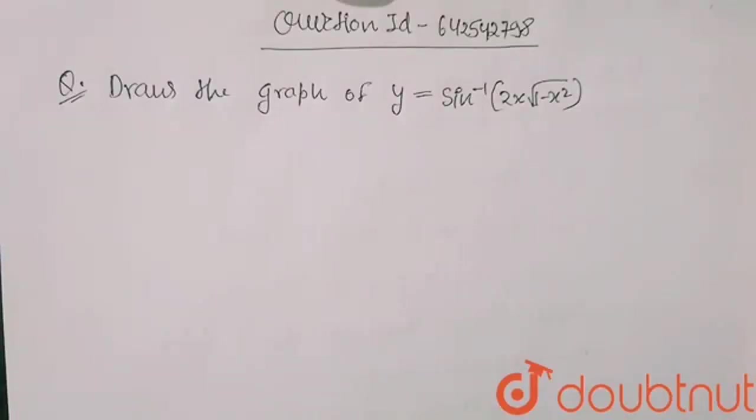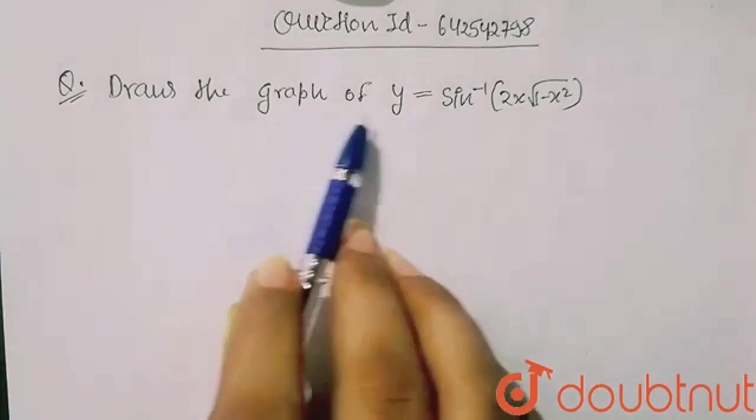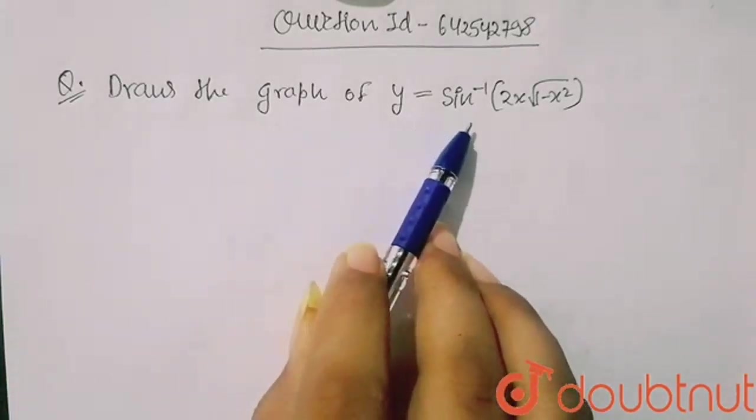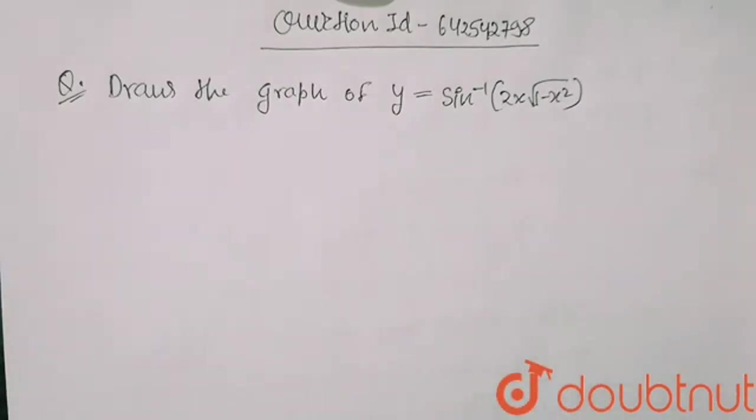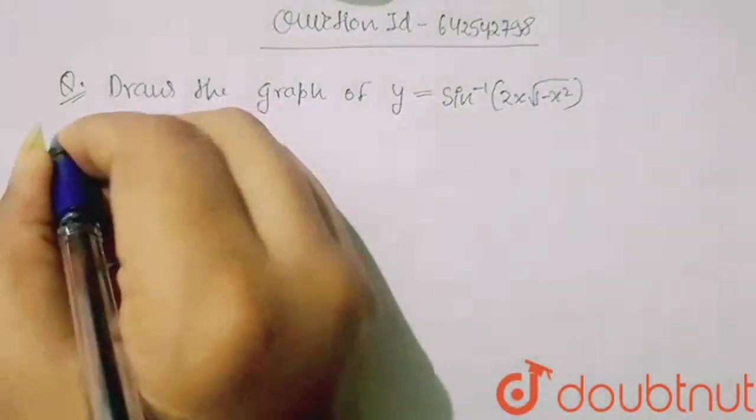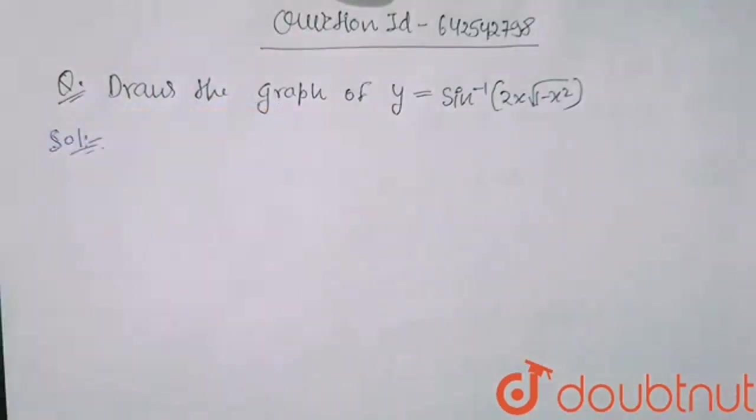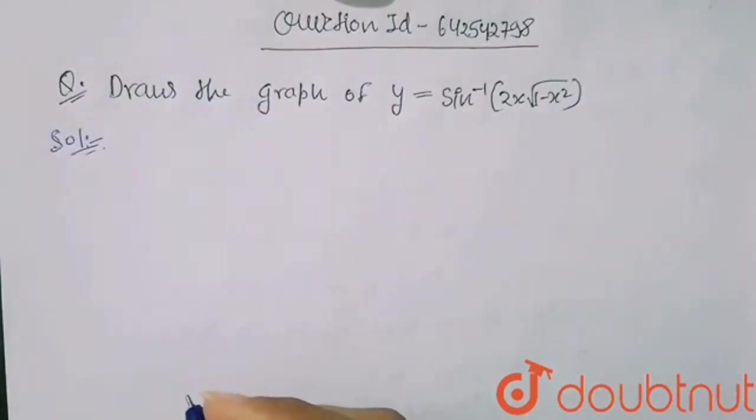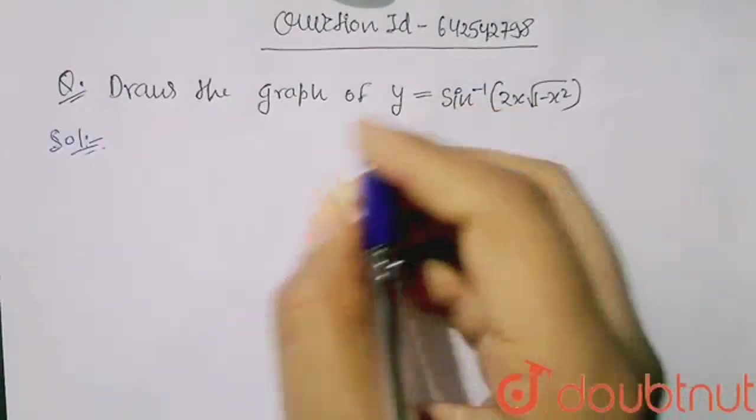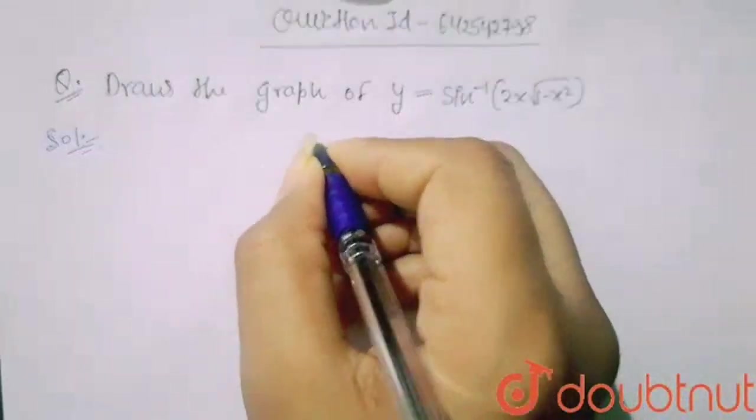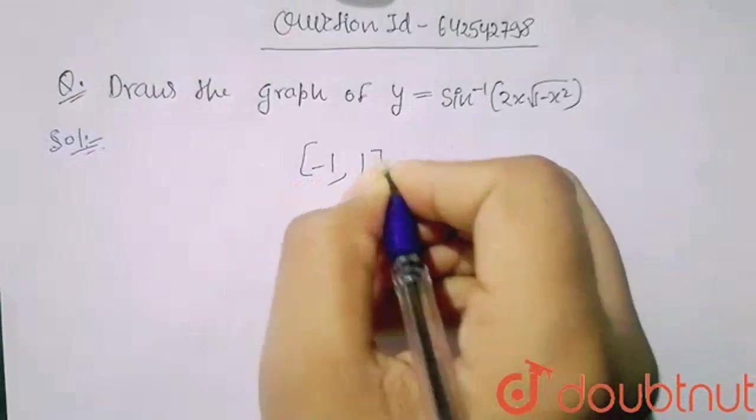Hello friends, as you can see in this question, we have to make the graph of y equals sin inverse 2x root 1 minus x square. So let's make its graph. First, you know that the domain of sine type of function is between minus 1 to 1.